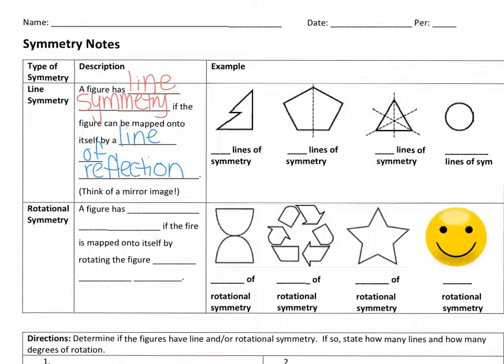Looking at this first figure, you can see there's not really a line we can split it on. So this figure has zero lines of symmetry. In our pentagon shape, if we split it down that line, it would be a mirror image of itself on each side of the line of reflection — so one line of symmetry.